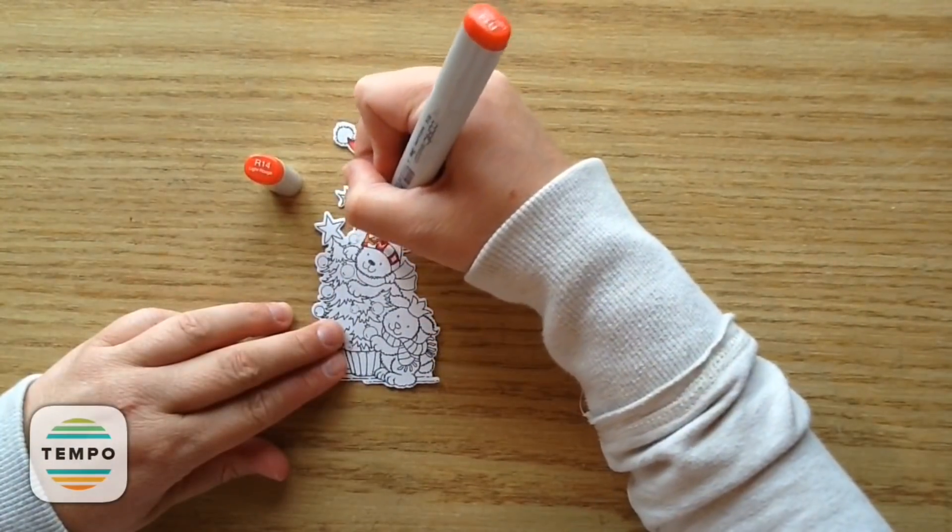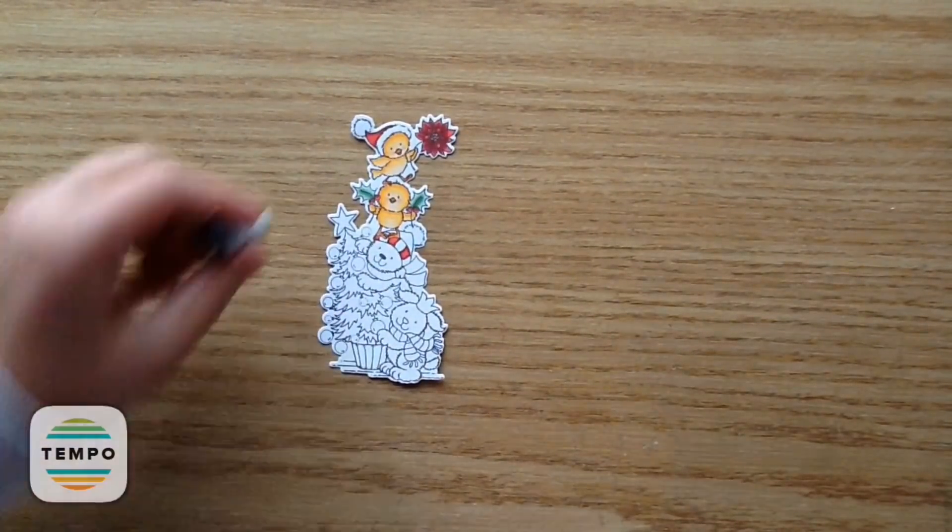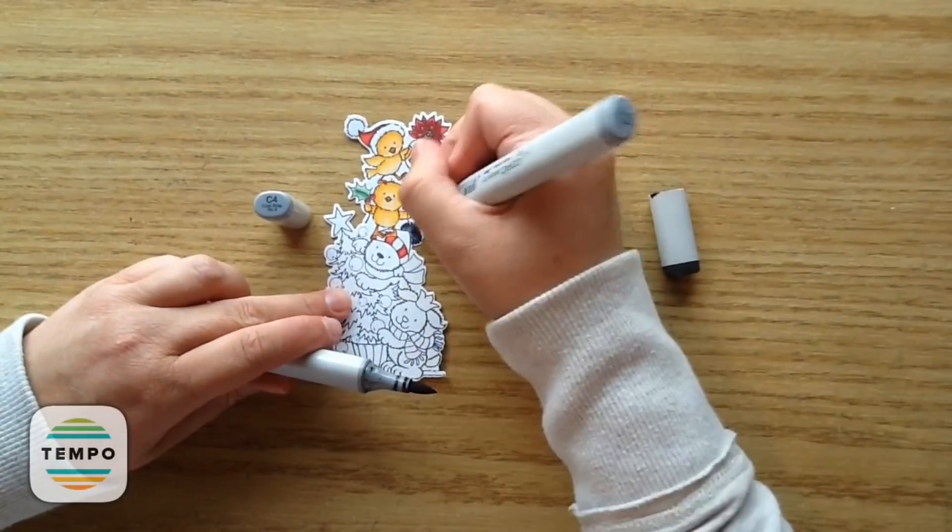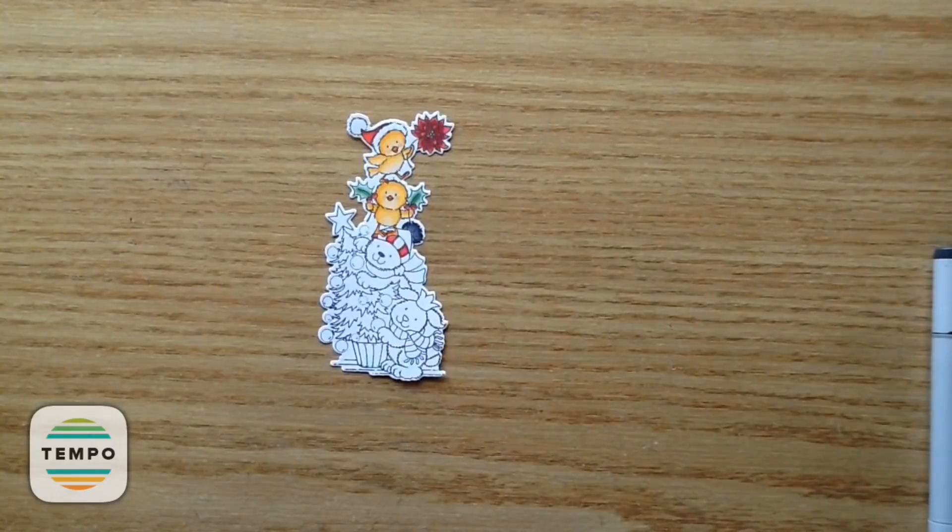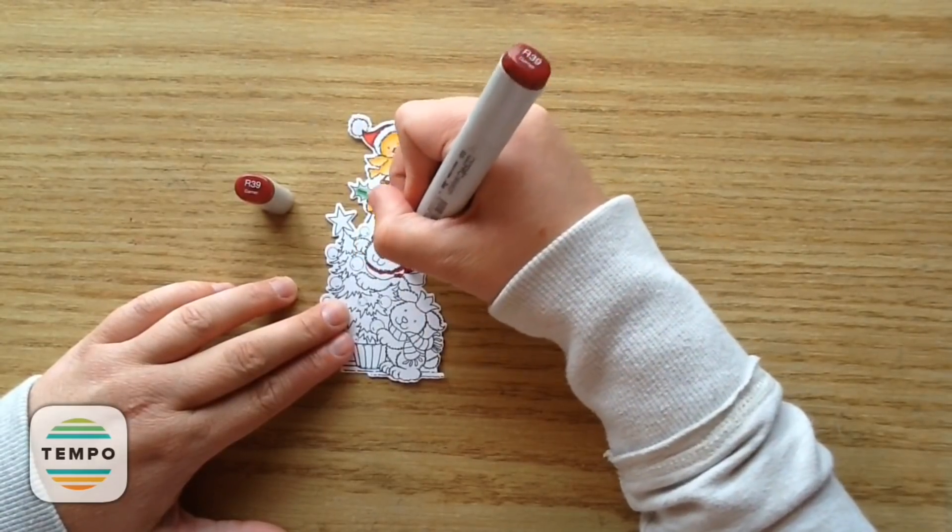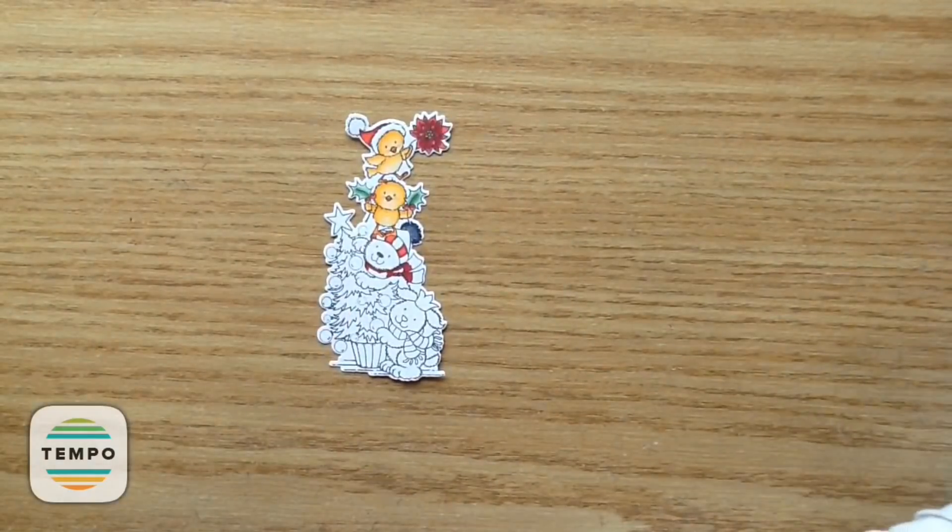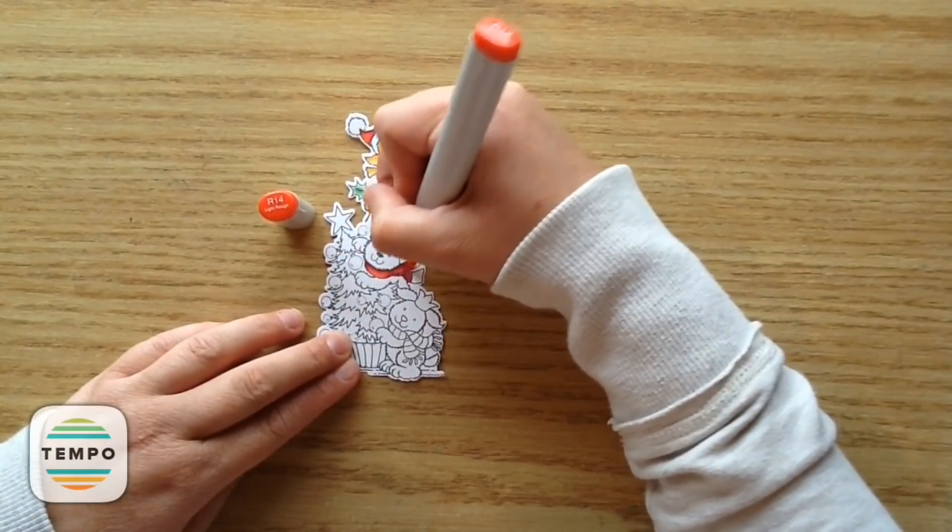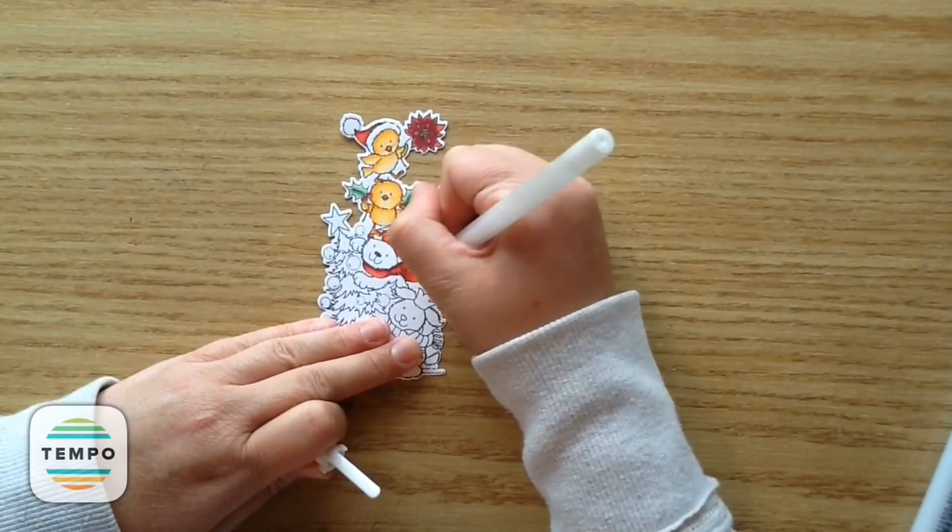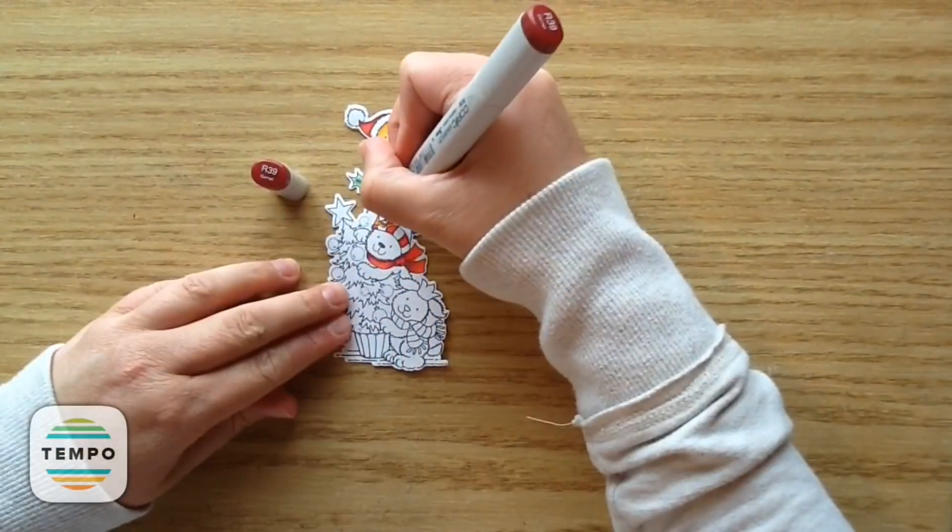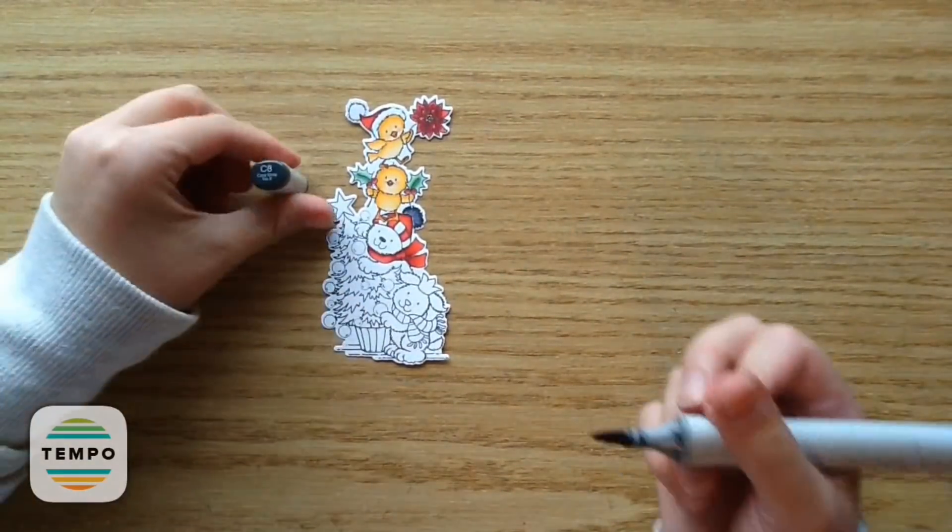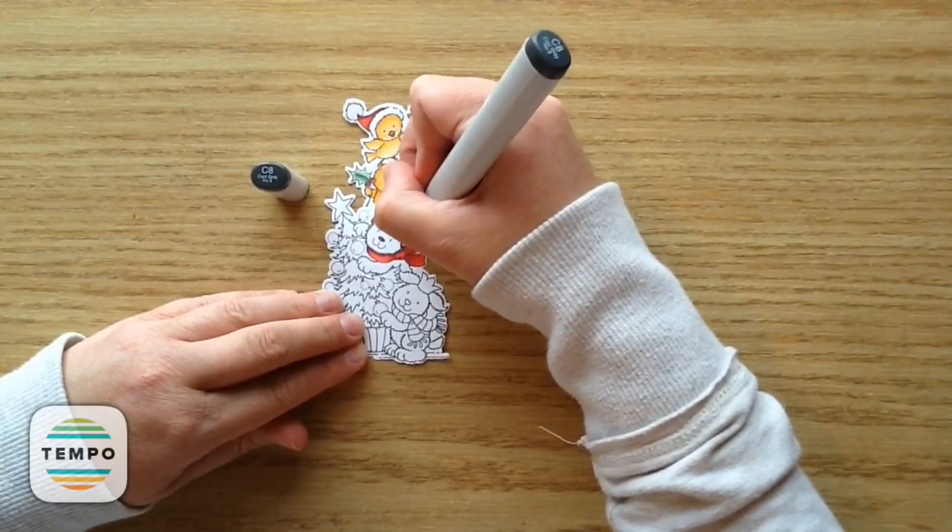And then for the little bear's hat, I'm using R39 and R12. Then I'm going to use some dark gray. So it kind of looks like a dark blacky gray. I used C8 and C4. And then I did the tip-to-tip technique to get kind of a color in between both of them. And then for the red on the scarf, I used R39 and R14. Then I go back in with that same color combo for the top part of the hat. And then I used C8 and C4 for the middle part of the hat.